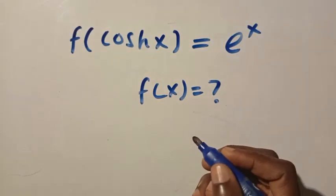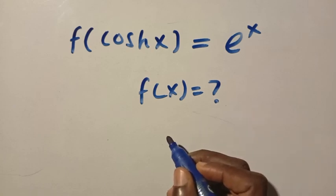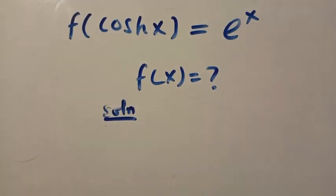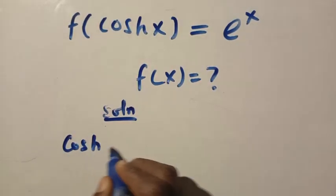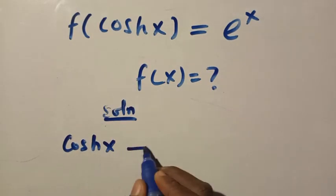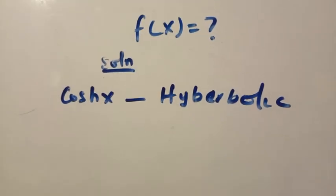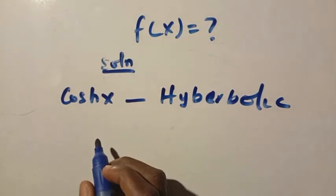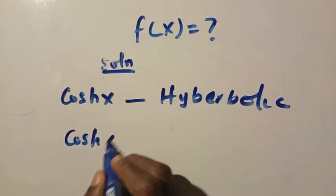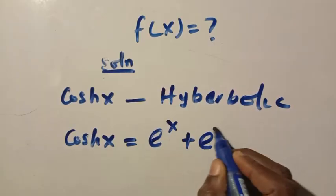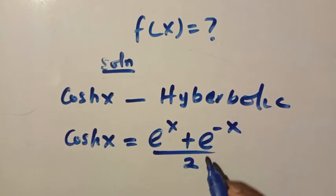So to solve this problem, let's get into it. When we consider this solution, the domain of this initial function is given as hyperbolic cosh x. The h here makes it a hyperbolic function. And cosh x is given as exponential of x plus exponential of minus x divided by two. This is the equivalence value of cosh x in hyperbolic and exponential functions.